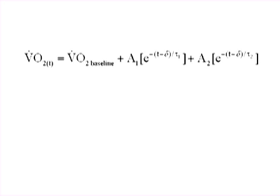Finally, use the terms of the equation provided by the best-fitted curve to calculate the contribution of the alactic metabolism. As an example, this is the equation for the mono-exponential adjustment. Use these terms to calculate the anaerobic alactic contribution with the following equation.